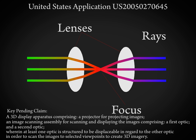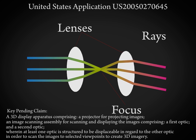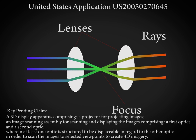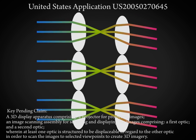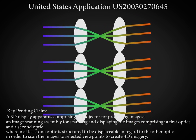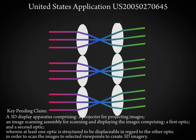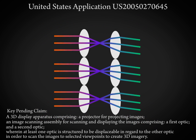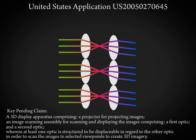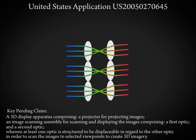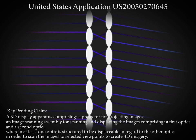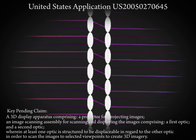What if we were to displace one lens relative to the other? As you can see, it becomes a beam steering device. Then, tile more and more of these lenslets together in a sheet. Here you can see that you've created a large-scale, continuous-scan, beam steering sandwich.